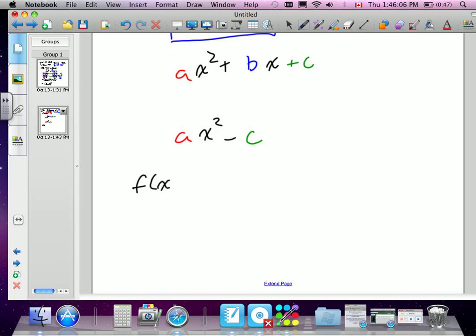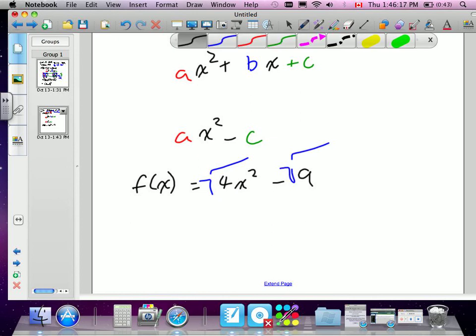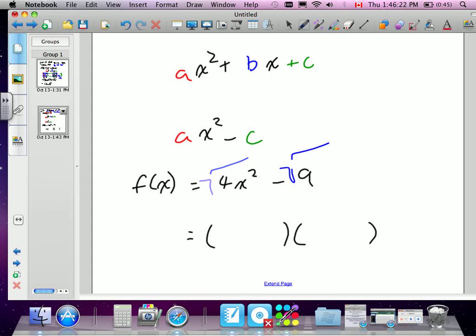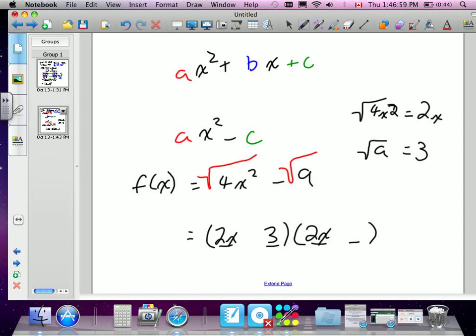So we're going to rewrite it down here. The question was f of x is equal to 4x squared minus, that's our subtraction, 9. So I can find the square root of both of these terms. And we go into our factored form. Remember, we always have our two brackets, our first terms and our last terms. So I find the square root of 4x squared. Square root of 4x squared, we do it on the side, is equal to 2x. That's the square root. So that means my first term will be 2x and my second first term will be 2x.